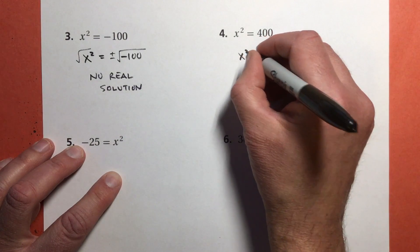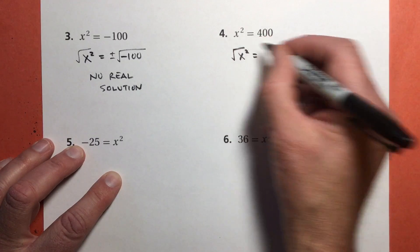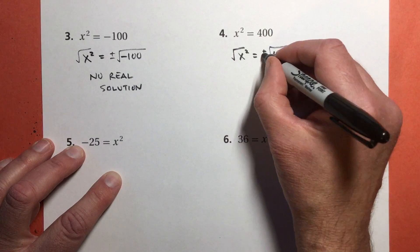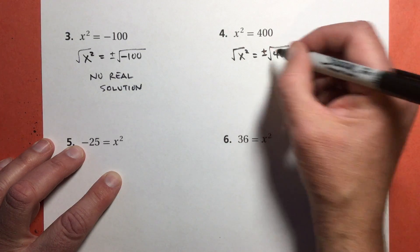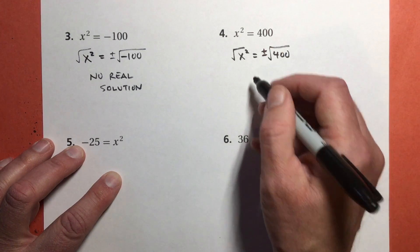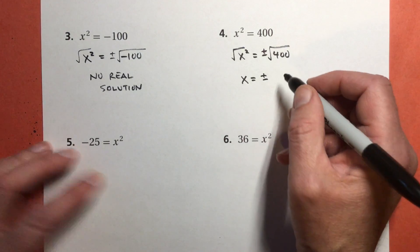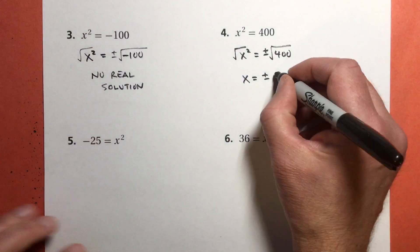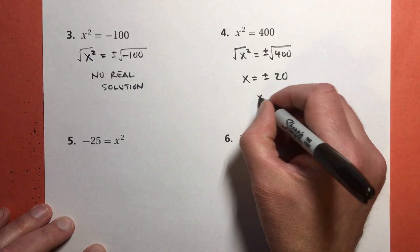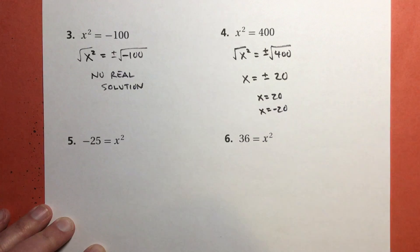Number 4. x² = 400. Take the square root. Don't forget the plus or minus. Try to make that a little clearer. My marker is getting a little blunt. Alright, I get x = ±. What's the square root of 400? Let's look at our list. 400 is right here. So that would be 20. And you can write x = 20, x = -20 if you want to write it that way.